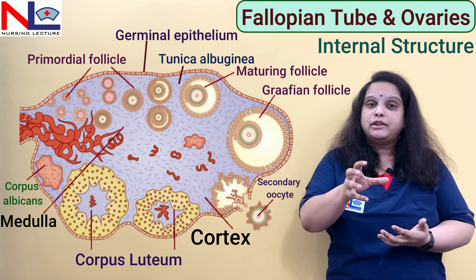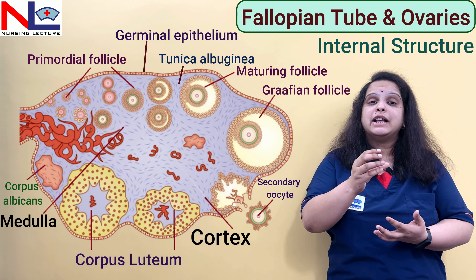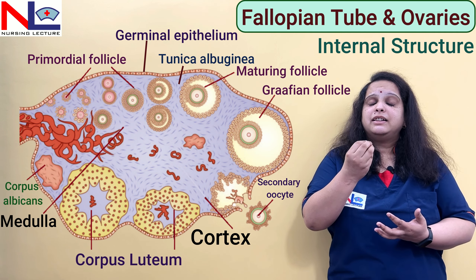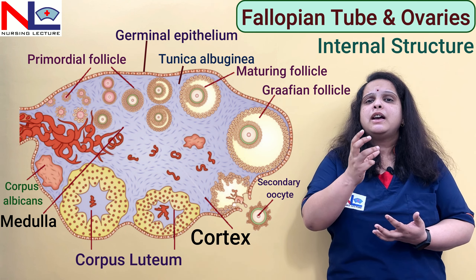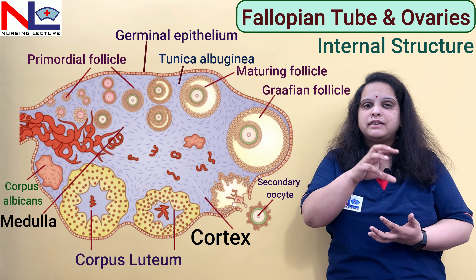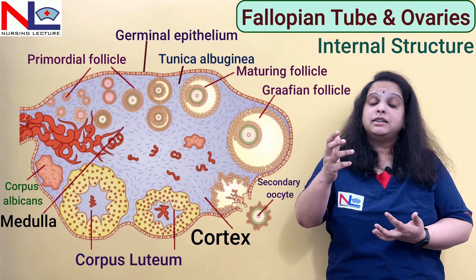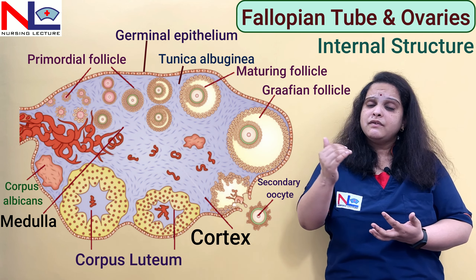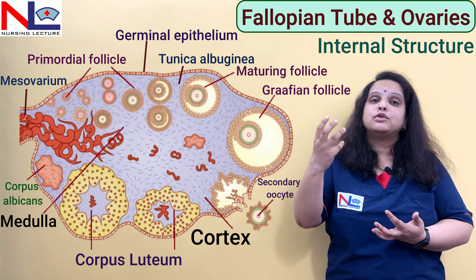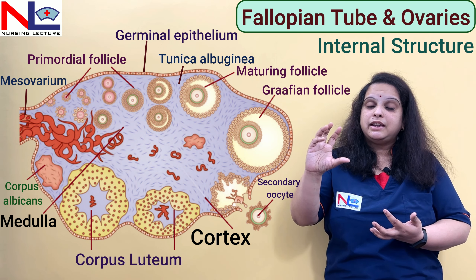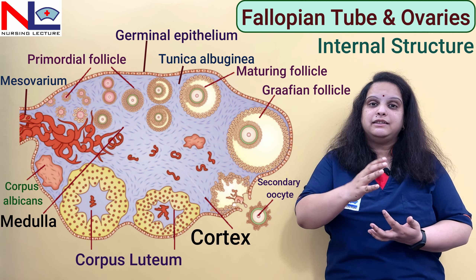Inner to the cortex is the medullary part. In this medullary part, there are various blood vessels, nerves, some lymphatic drainage, muscle layer, loose connective tissues, and some hilus cells. The hilum is the part through which the blood vessels enter, and it is attached to the mesovarium — the posterior extension of the broad ligament — through which these blood vessels enter.